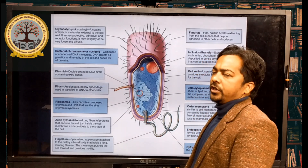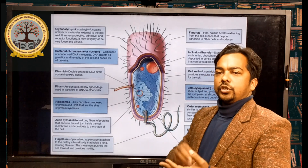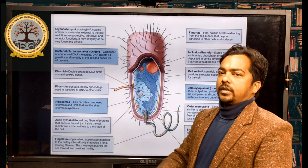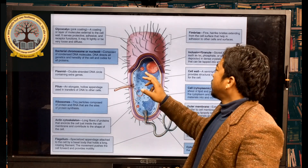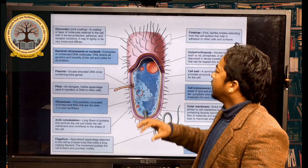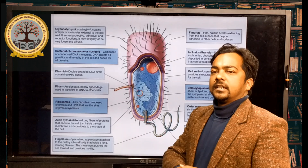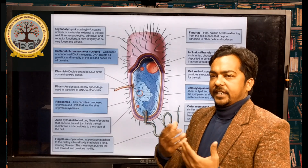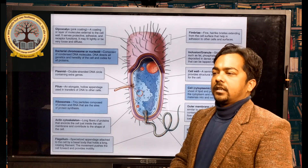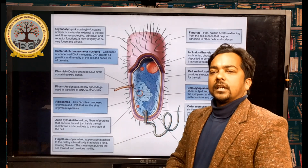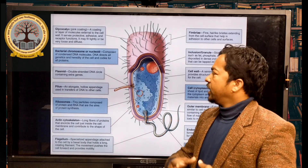An important characteristic is the bacterial chromosome, or nucleoid. Any prokaryotic cell has a nucleoid, which contains circular DNA — not bound in a double membrane like eukaryotic cells. This is known as nucleoid. It is composed of condensed DNA molecules. DNA directs genetics and heredity. But in prokaryotic cells, the nucleoid is not enclosed by a membrane, so in prokaryotic cells it is known as nucleoid.